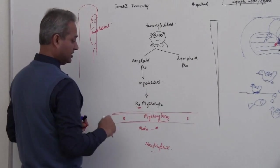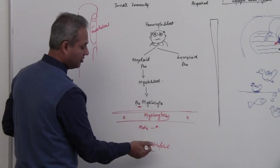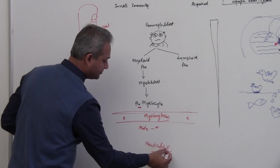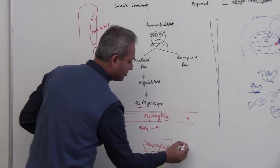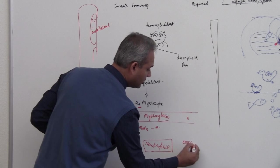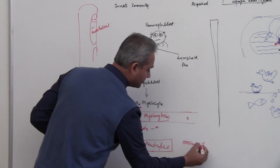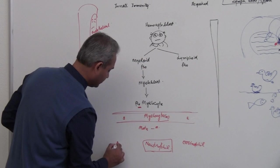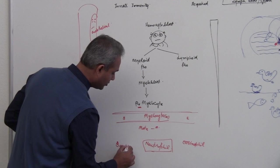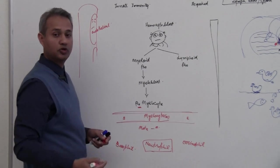Now within the granulocyte we would have the final mature cell. So we will have a neutrophil or we have an eosinophil or we have a basophil. So these are mature cells.